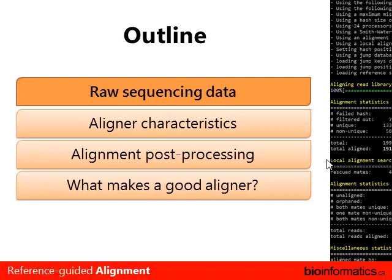The way I've broken down this lecture is into four main sections. In the beginning, let's talk about what the data looks like before you even start thinking about alignment, because that has a lot of impact on how you're going to align the reads. Then we'll talk roughly about what are the different aligner characteristics. We'll also talk about best practices involved after you've done the normal alignment that will really help in whatever subsequent analyses you're going to do, especially if you're doing variant calling.